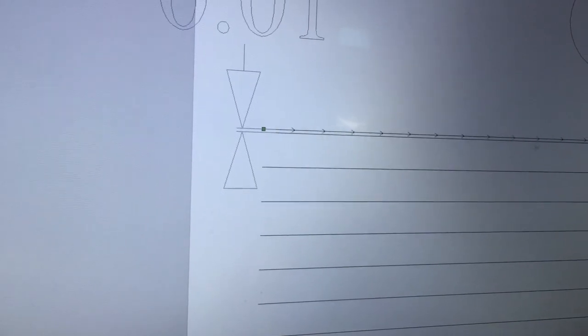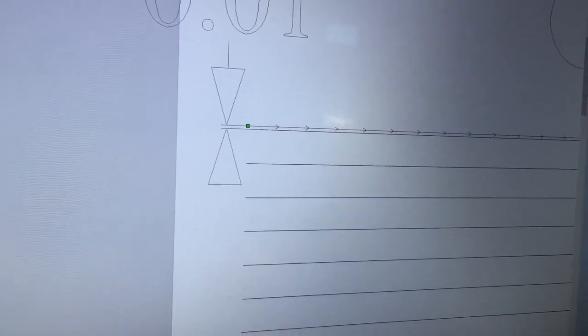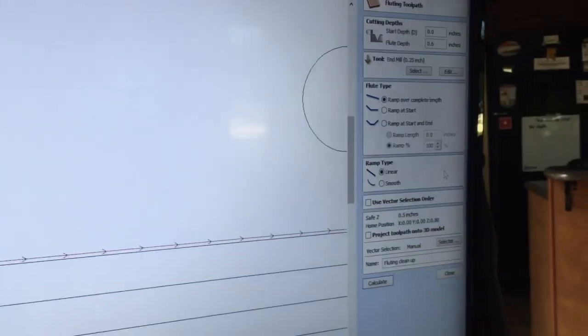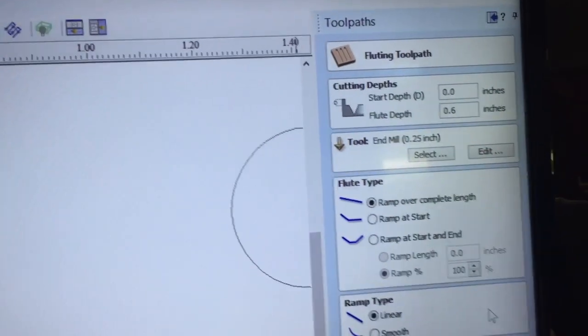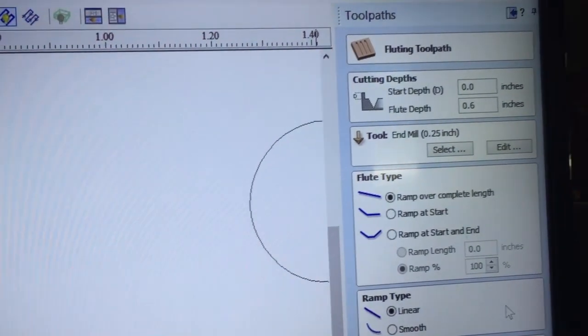I'll highlight my flute cleanup. I click it and you see it turns green, and when I open it up, you can see that the depth is the same as it was before. It starts at 0.0 and goes down to 0.6.